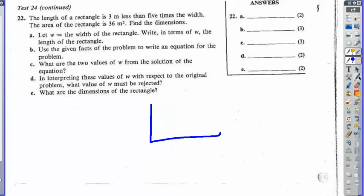So I have a rectangle, and it says that the length of a rectangle is—and 'is' means equal—three meters less, so that's minus three, than five times its width. So if my width is here, then my length is going to be 5w minus 3.